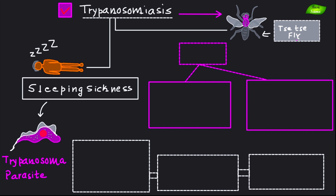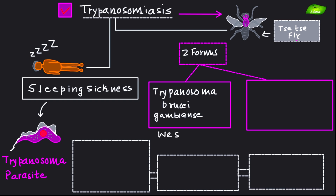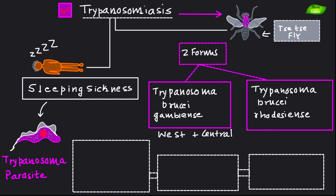This disease has two important forms. The first is Trypanosoma brucei gambiense, which is found in western and central Africa, and the second is Trypanosoma brucei rhodesiense, which is found in east Africa.